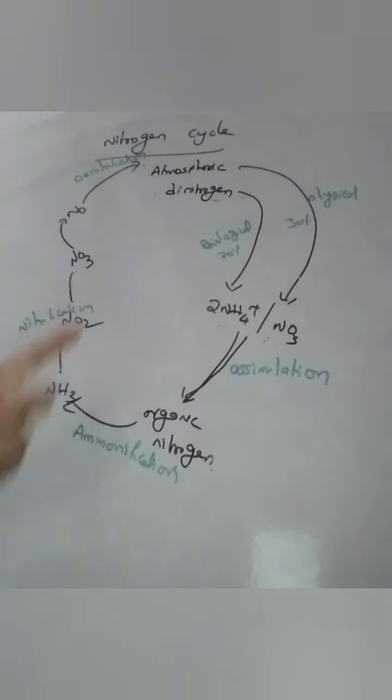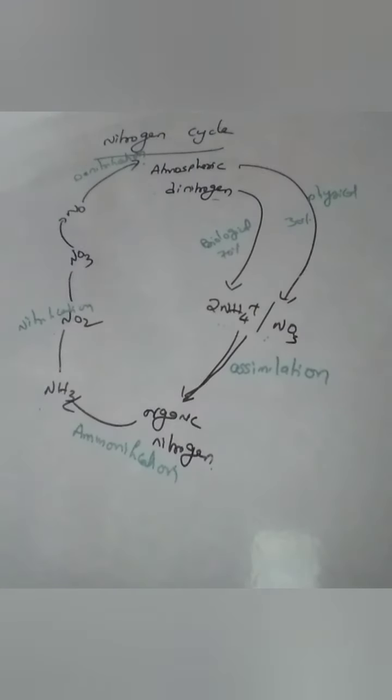Whatever it is, the nitrogen cycle starts from atmospheric nitrogen and ends there, with a large amount being absorbed by plants and later undergoing ammonification, nitrification, and denitrification steps.